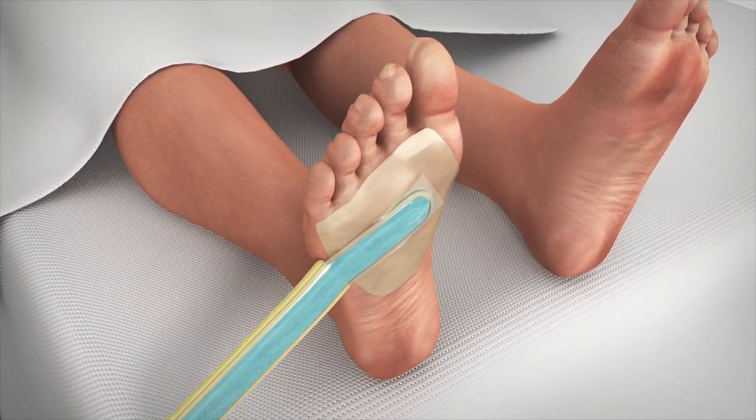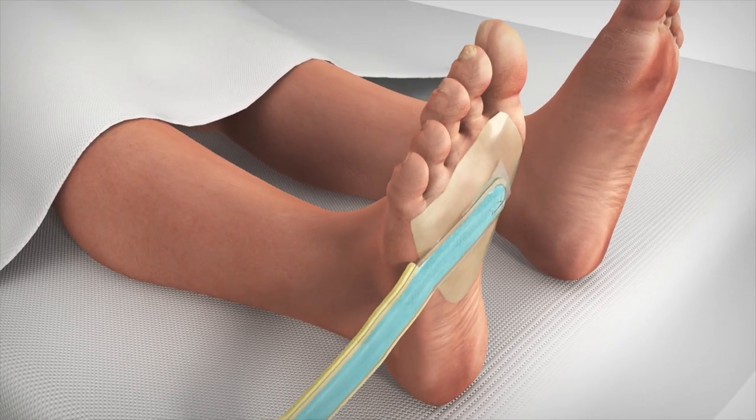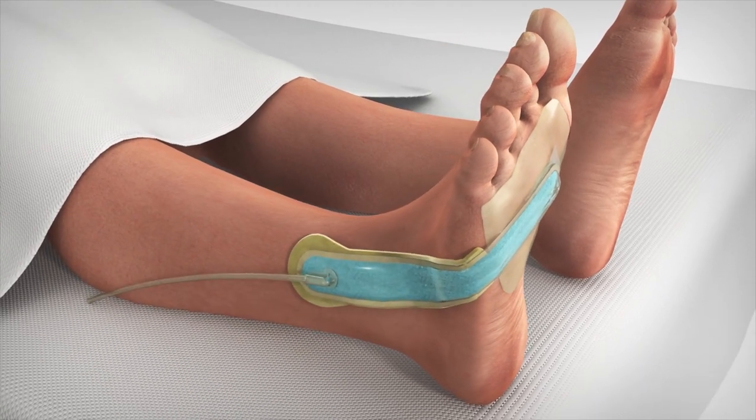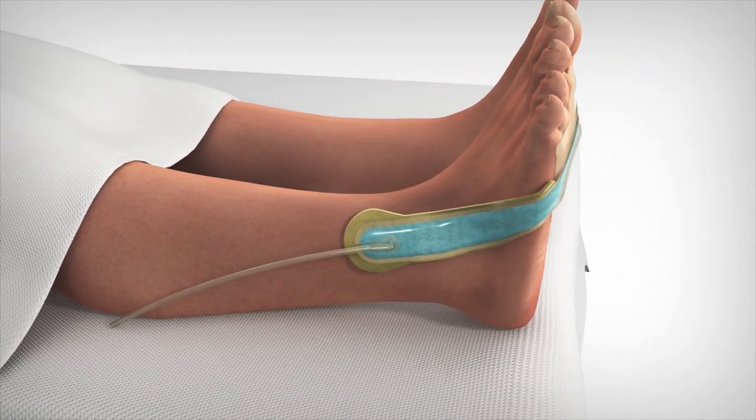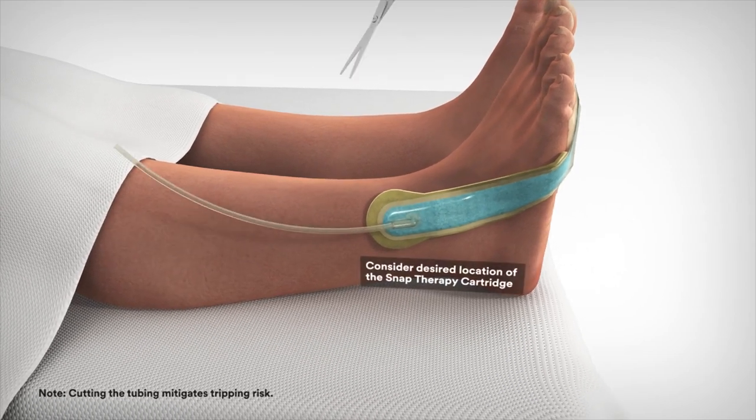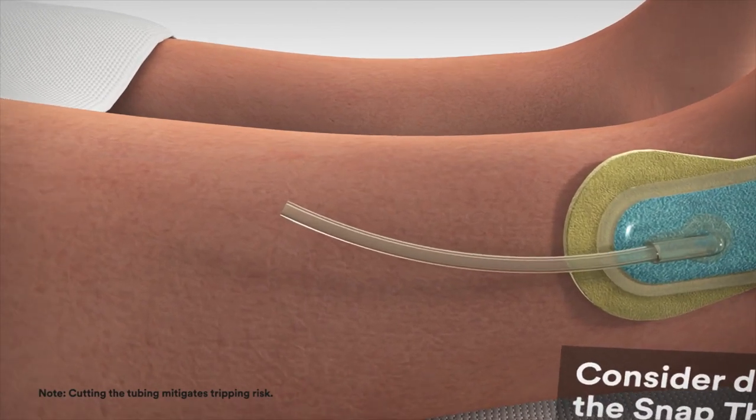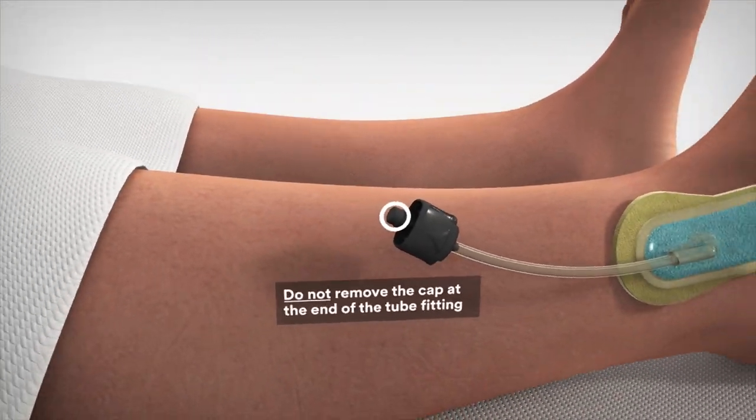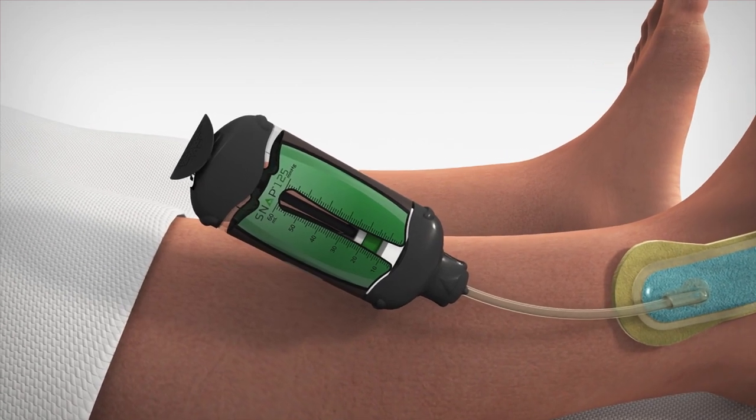It is often helpful to hold your warm hands over the dressing to allow the adhesive to properly adhere to the skin. Route the bridge section of the dressing away from the wound in order to mitigate contact pressure at the wound and secure the bridge section to the patient. Cut the tubing to the desired length ensuring the cut is straight and not at an angle. Fully insert the tube fitting into the tubing. Connect the SNAP therapy cartridge to the tube fitting.